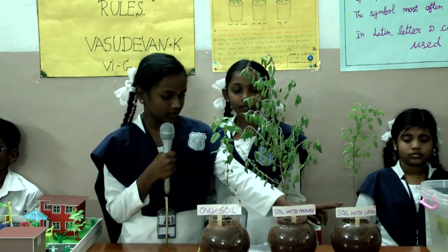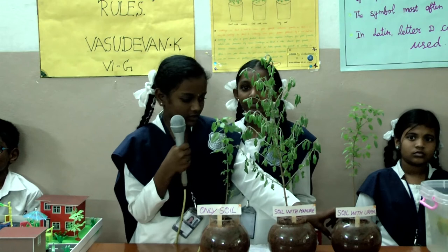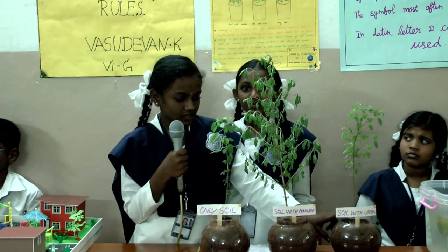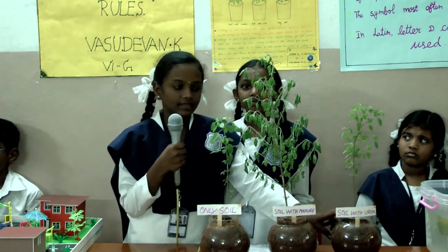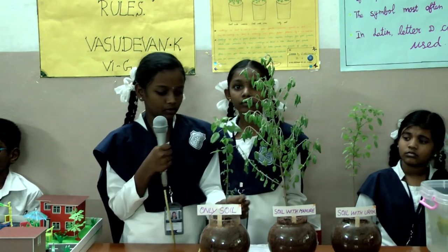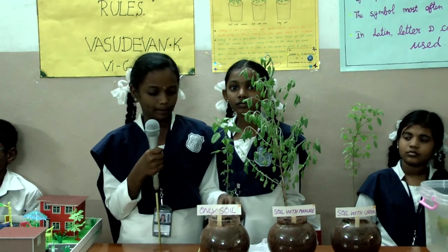Take another bowl and put the fertilizer such as urea mixed with the soil. Then, put the tulsi seed on all the plants.